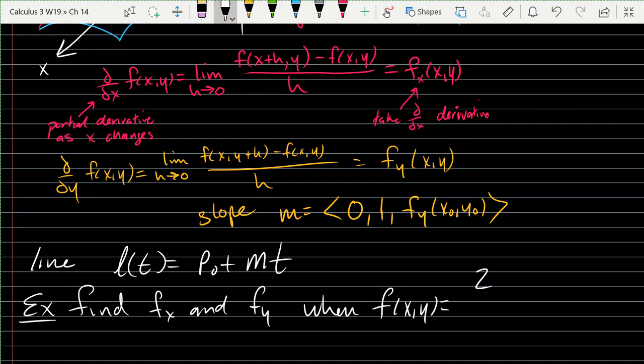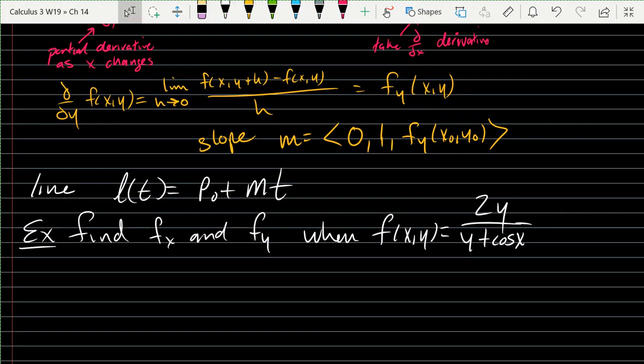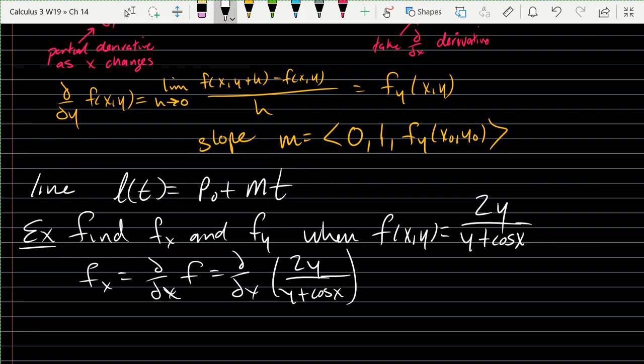So our first example, F of X, Y will be 2Y over Y plus cos X. So F_x, the partial derivative, is d/dx of F, or d/dx of 2Y over Y plus cos X. So this is our first partial derivative. We're taking an X derivative. That means Y is constant. So in this case, think of Y as constant.